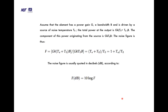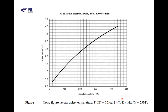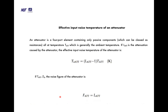As noise temperature increases, noise figure also increases, as shown in the figure. For an attenuator — a four-port element containing only passive components all at temperature T (generally ambient temperature) — if L_attn is the attenuation, the effective input noise temperature is T_attn = (L_attn − 1) × T_attn kelvin. When attenuation equals T₀, the noise figure of the attenuator equals L_attn.